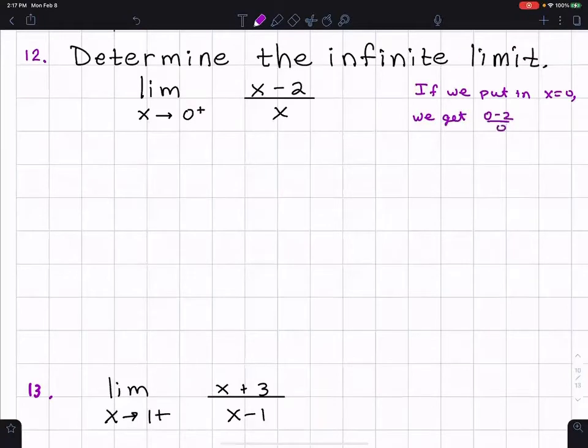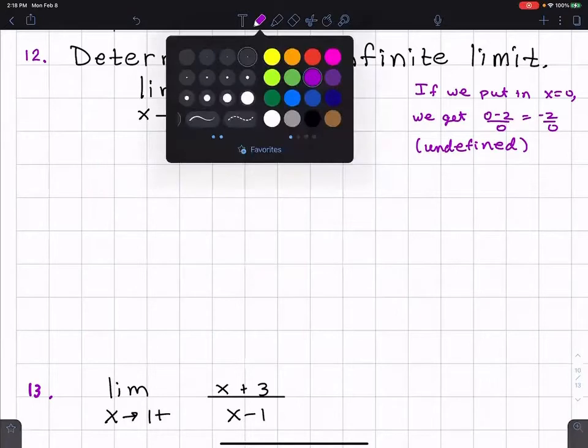Which is negative two over zero, which is undefined. But the thing that happens is when you have a form - I'm not saying that's a number - but when you have a form where you have something that's not equal to zero divided by zero, that tells us that we're going to get an infinite limit.